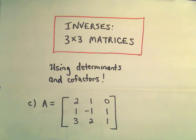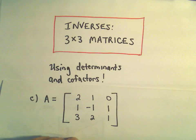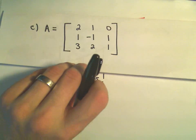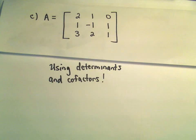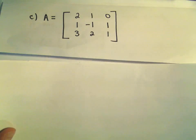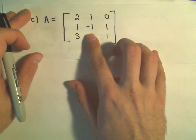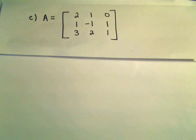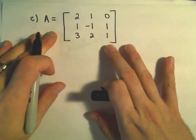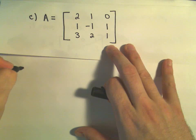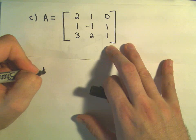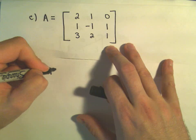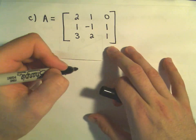One more example about finding inverses of a 3x3 matrix using determinants and cofactors. We're going to find the inverse of the matrix [2, 1, 0; 1, -1, 1; 3, 2, 1]. The first thing we're going to do is find the determinant of A, expanding along the first row.